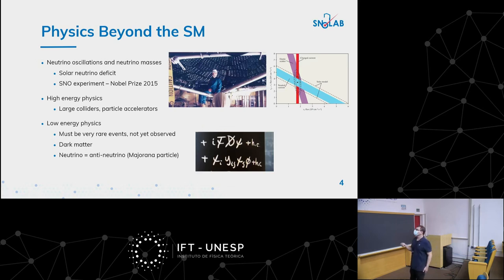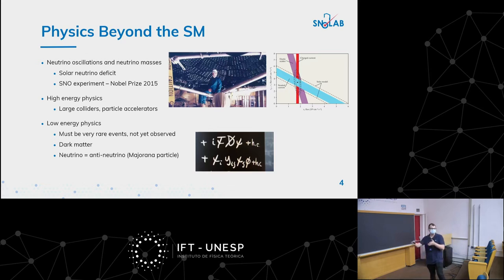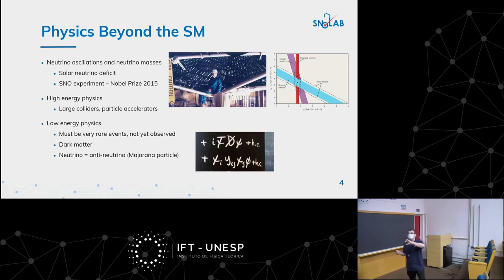Now that we know neutrinos have mass and no electric charge, we could hypothesize that a neutrino is its own antiparticle. If you change charge parity, it's not only left-handed anymore because it has mass. This would bring a new type of vertex, and the standard model has lepton number conservation - every time you see a lepton in an interaction you have an anti-lepton. But if a particle is its own antiparticle, you break this symmetry, modifying the standard model in a substantial way.